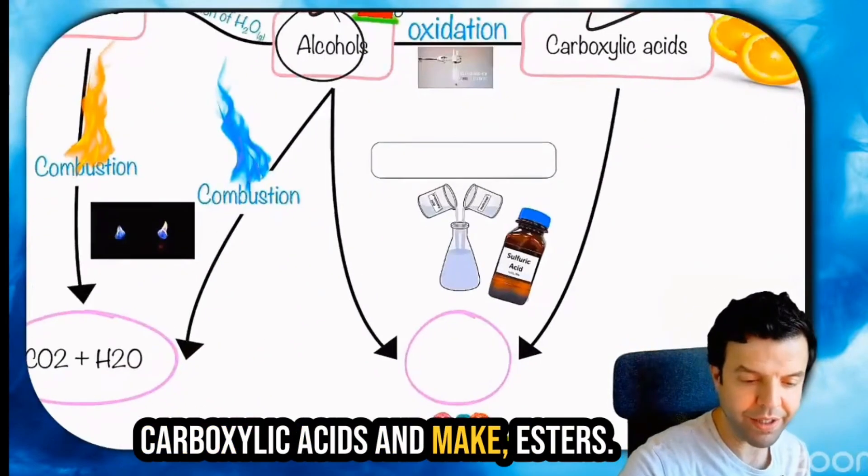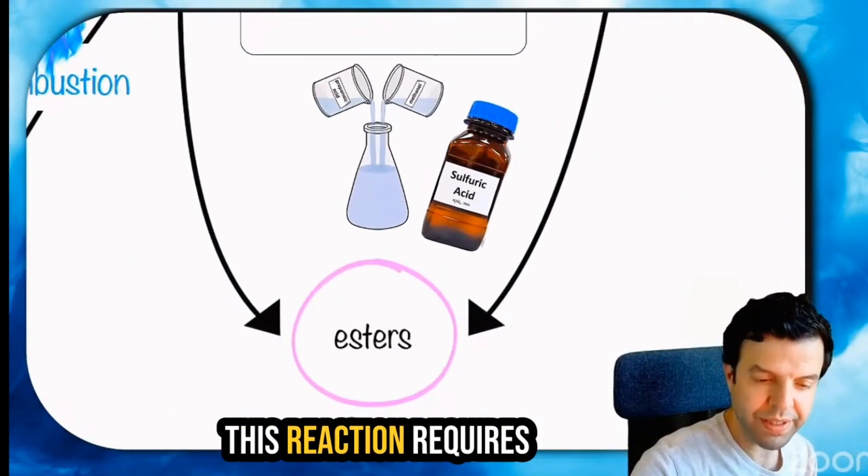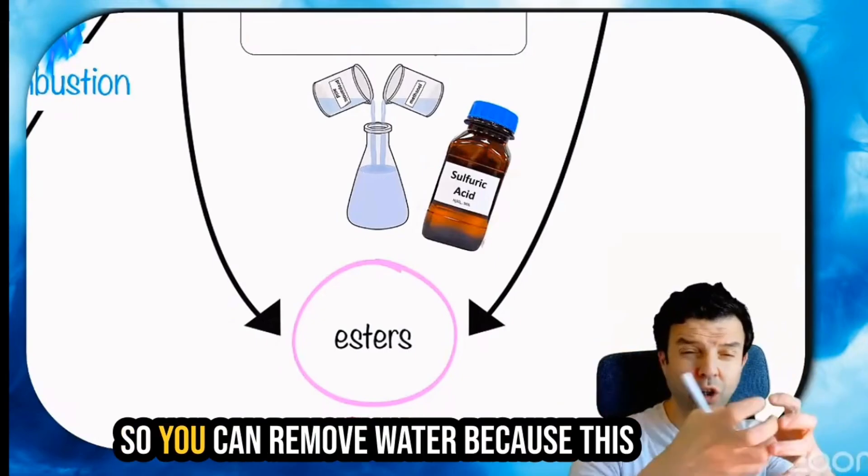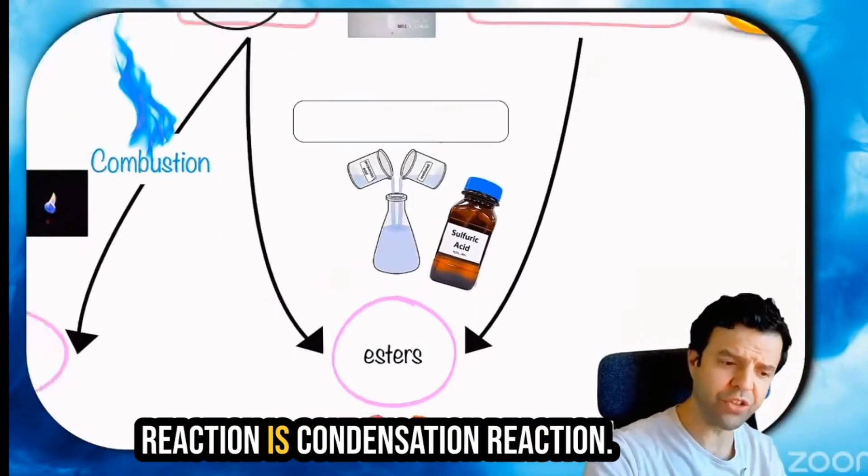If you combine alcohols and carboxylic acid, you'll make esters. This reaction requires sulfuric acid concentrated. You can remove water because the reaction is condensation.